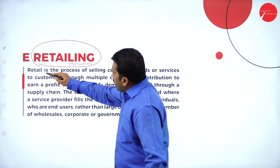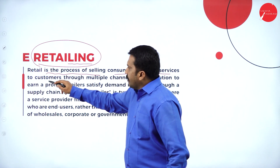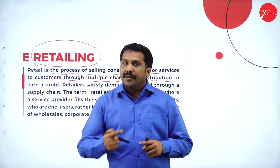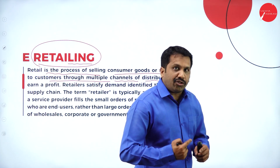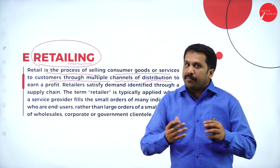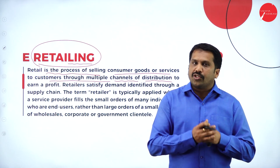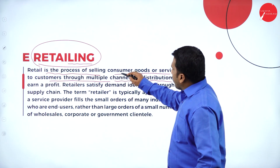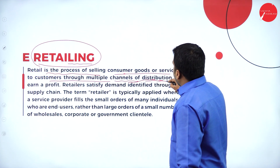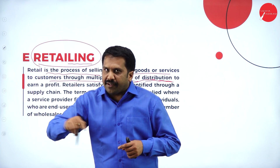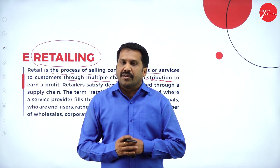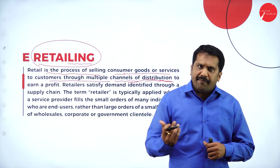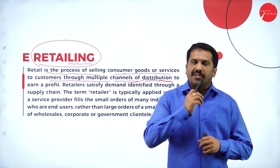Retail is a process of selling consumer goods or services to customers through multiple channels of distribution — through Amazon, Flipkart, Myntra. Many websites and shops are there. If you want to buy a Samsung mobile in Mysore, you will find more than 5,000 shops. That is selling consumer goods through multiple channels of distribution. If Samsung mobile is available in every road and every shop, buyers will be more, because buyers get confidence that Samsung mobiles are everywhere and therefore genuine.